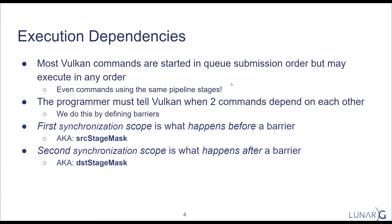Vulkan, like other modern graphics APIs, doesn't do a lot to guarantee that the commands you give are serialized. In fact, it does as much as possible to allow tasks to happen in parallel for best performance. Commands are started in the order they're submitted in queues, but they may execute in any order with a few guarantees. For example, operations on a given fragment will operate in order, but other than that, most of Vulkan is not regulated in terms of order.